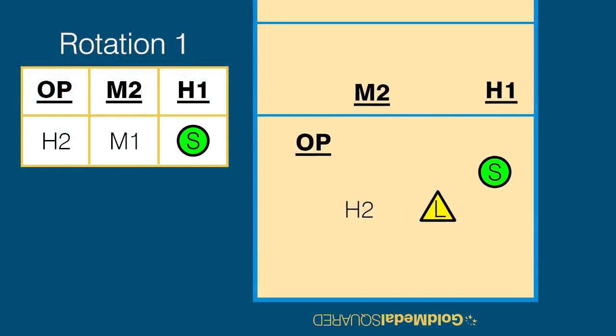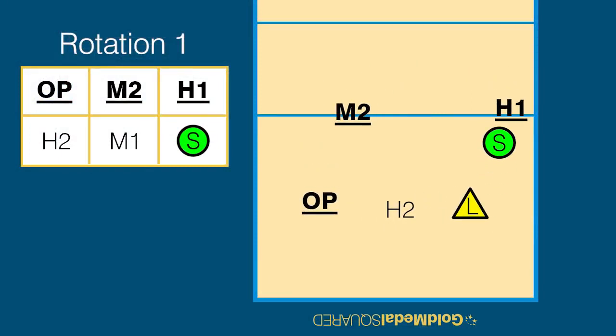Another Rotation 1 formation option allows the setter to step up and stand close to the net behind the H1. Obviously this means the H1 can't pass, so the opposite will step back and pass from Zone 5. The H1 will hit a red, the opposite will hit a go, with the middle hitting a middle attack.